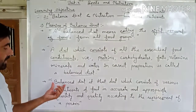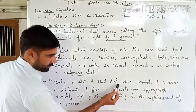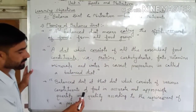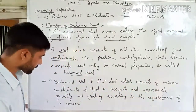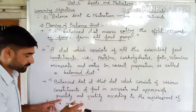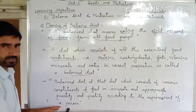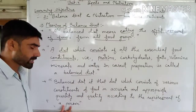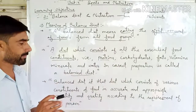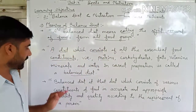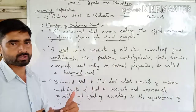Third meaning of balanced diet: a balanced diet is that diet which consists of various constituents of food in accurate and appropriate quantity and quality according to the requirement of a person. Every individual has a different type of requirement of the balanced diet.